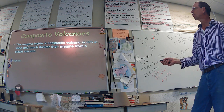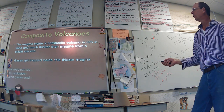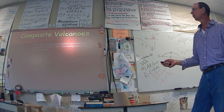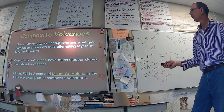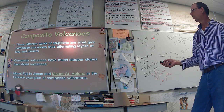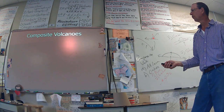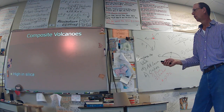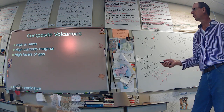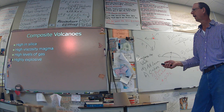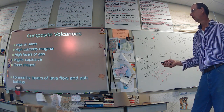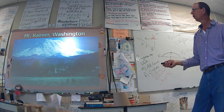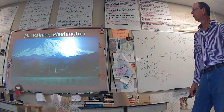There's a composite one — these are the pretty volcanoes. They look like a snow cone from a distance because they get snow on them. Mount Fuji, Mount St. Helens — which is here in the United States. Got a lot of silica, the magma is very viscous, there's a lot of gas, very explosive. Again, lava and ash flow. There they are — pretty!